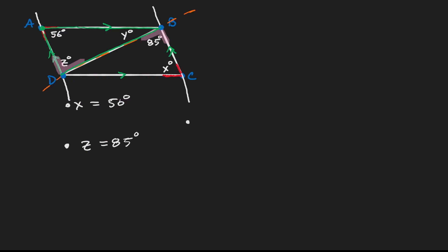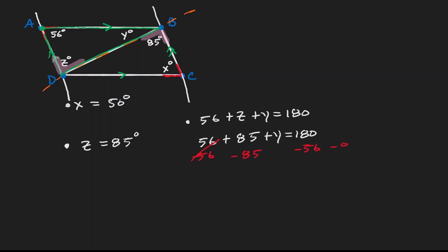So now I know that if I get 56 and add angle Z and add angle Y, that is equivalent to 180. Z is 85, so 56 plus 85 plus Y equals 180. Taking away 56 and 85 from both sides, Y is equivalent to 39 degrees. So now we have two ways to think about parallelogram problems.